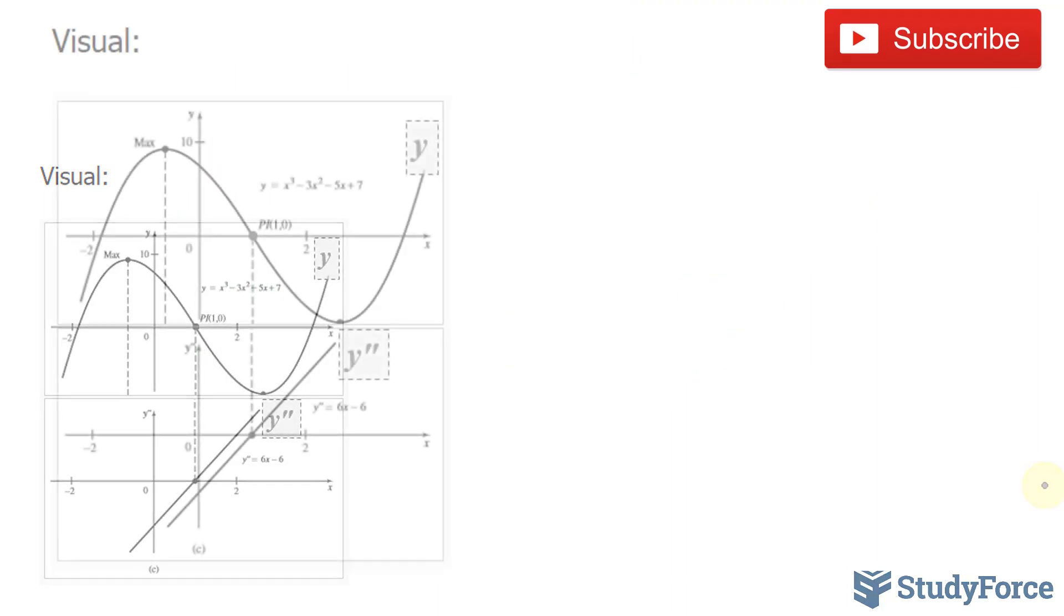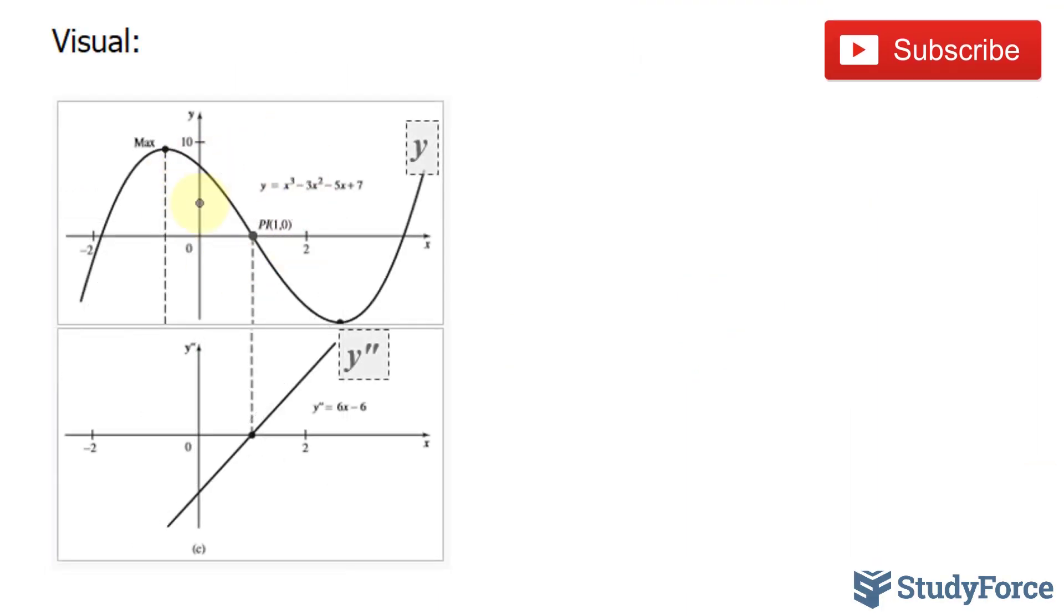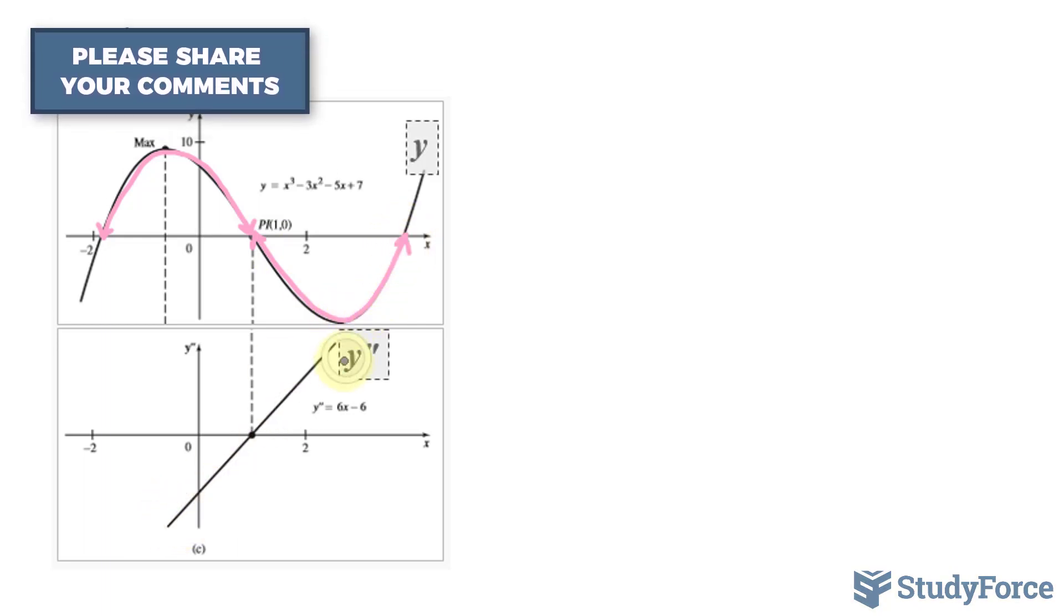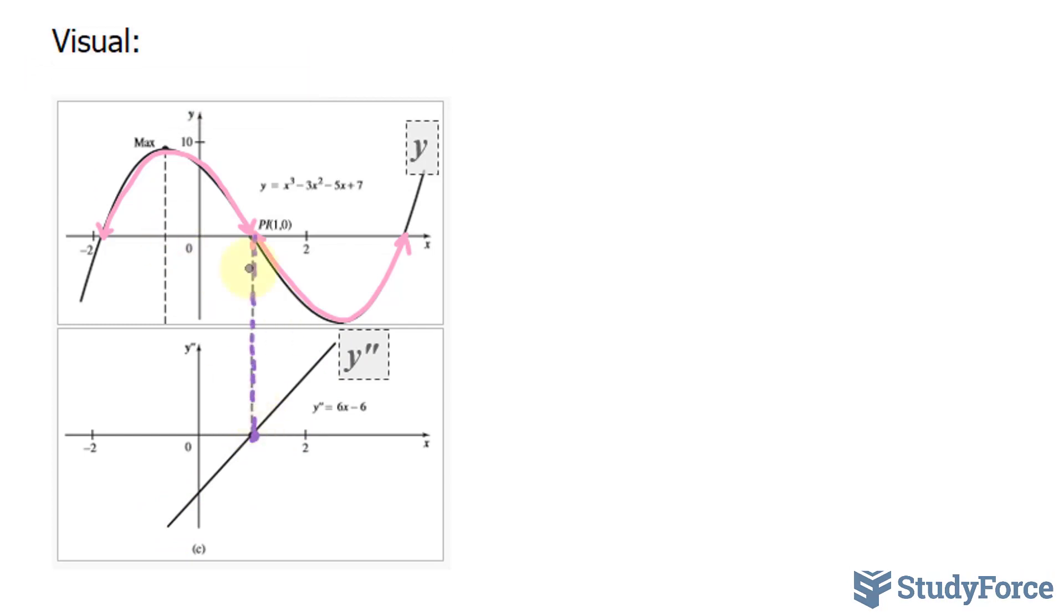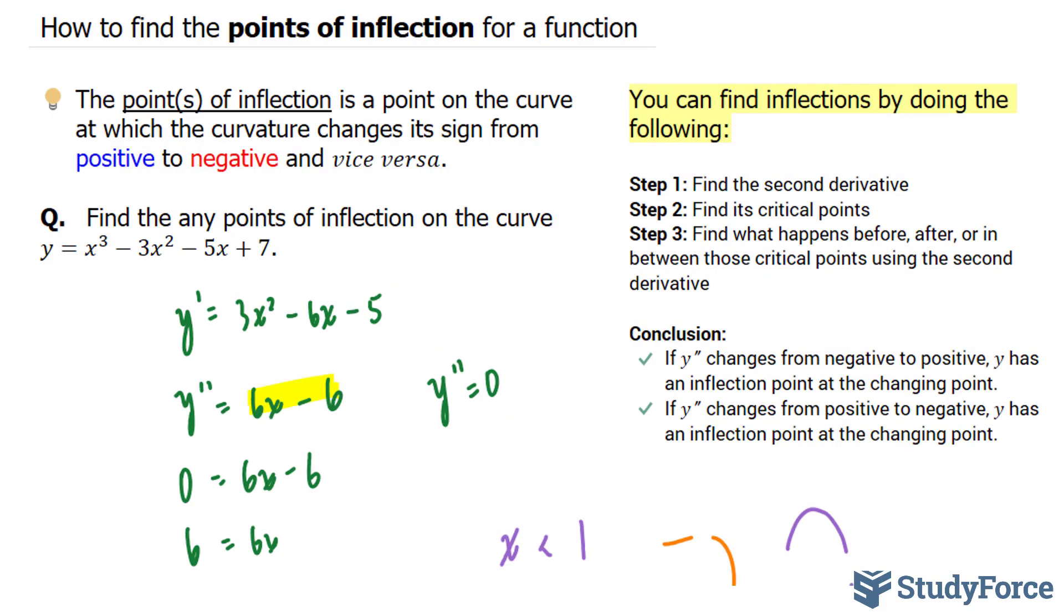Take a look at this. This represents the original function, this represents the second derivative. Notice that before x is equal to 1, we had this concave down. And then after x is equal to 1, it's concave upwards from there. And this is the relationship between the second derivative, which is the x-intercept of the second derivative, and the original function's point of inflection. And so there you have it. That is how to find the points of inflection for a function.